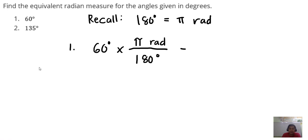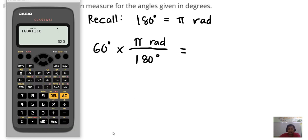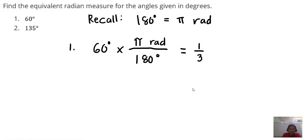Basically, we are multiplying 60 times pi over 180 degrees. In that way, the degrees will be canceled out. So 60 divided by 180, this can be written as one-third pi, one-third pi radians.